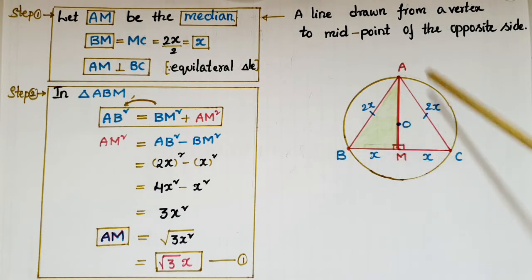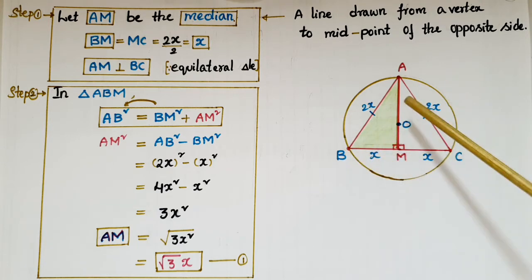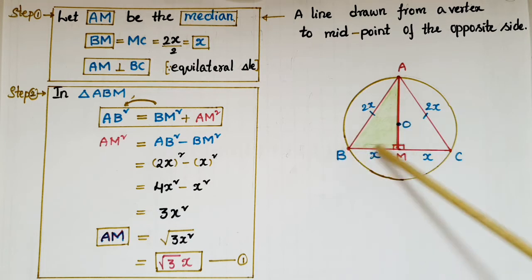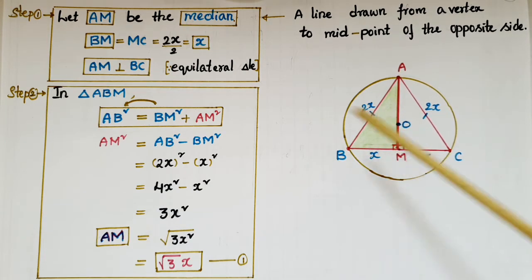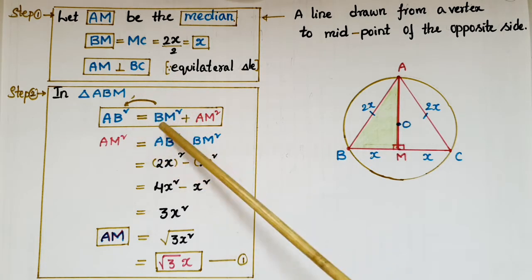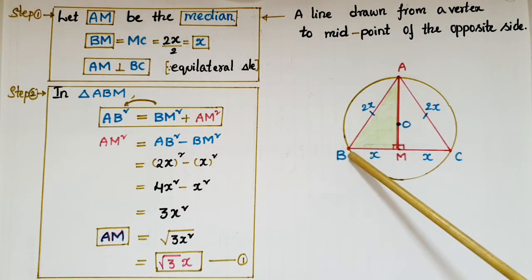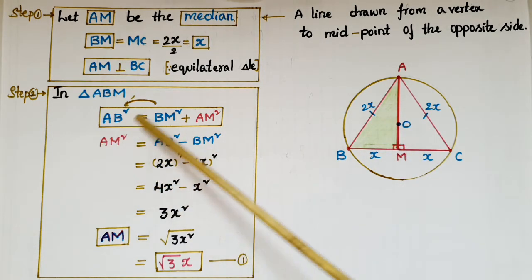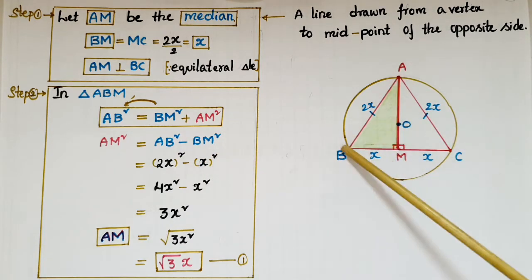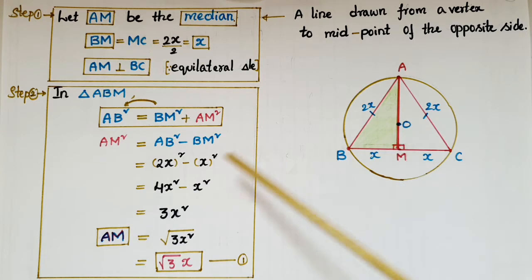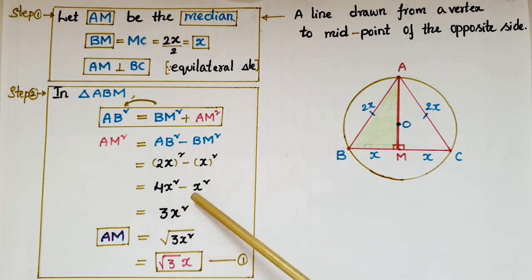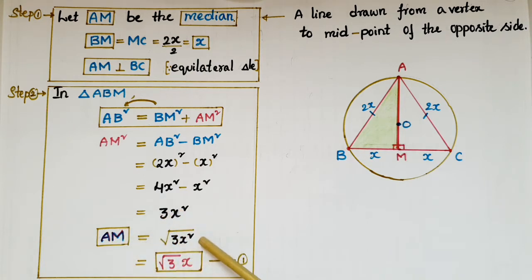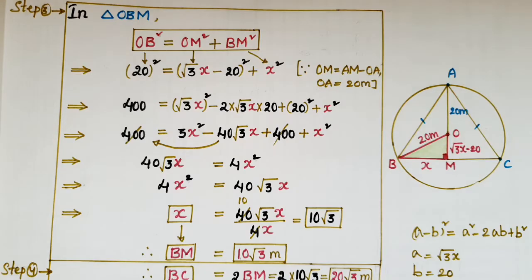We need to find any one string length since all are equal. Take triangle ABM — this is a right-angled triangle with the right angle at M. By Pythagoras theorem: AB² = BM² + AM², so AM² = AB² − BM² = (2x)² − x² = 4x² − x² = 3x². Therefore AM = √(3x²) = √3 · x. This is our first equation.